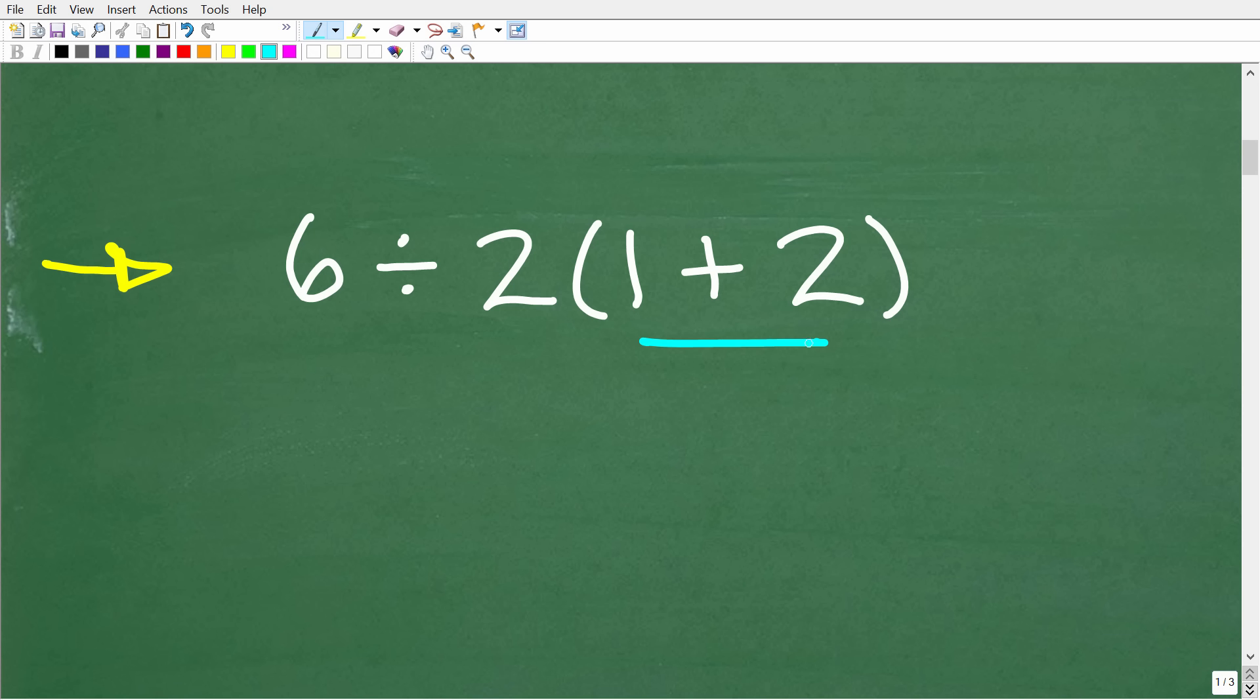So right here we have addition, here we have division, and then right here we actually have multiplication. Anytime you have a number outside of parentheses, something like this 2 parentheses 5, this means multiplication. So let's take one path here and see if this is the right way to get to the right answer.